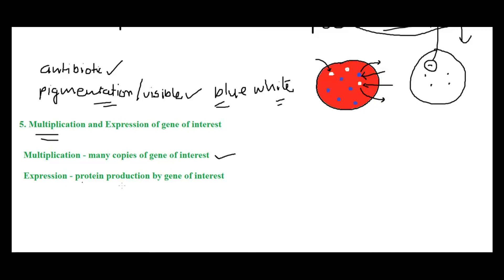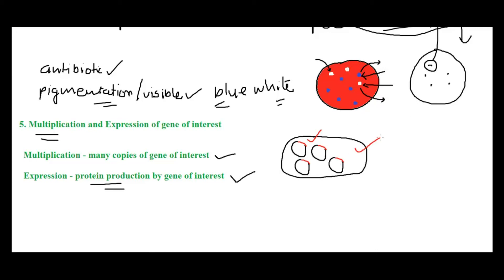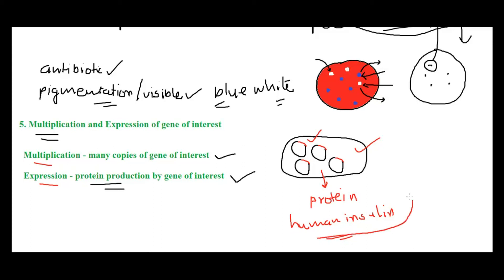We multiply the selected cells to get the desired product in large quantities. The goal is protein production from the gene of interest. The plasmid has the ability to replicate itself, so it multiplies in the host cell and produces many copies. Once we find the transformed cell with recombinant DNA, we multiply it and the system expresses your gene of interest to give you your protein of interest — for example, human insulin, produced by taking the insulin gene, putting it in a vector, transforming the cell, selecting it, and scaling up production.